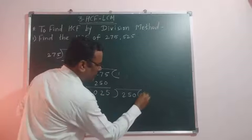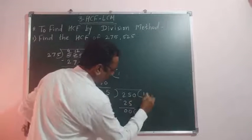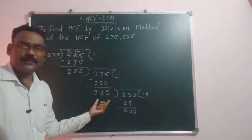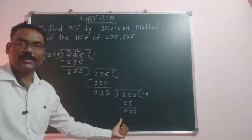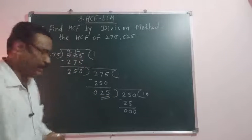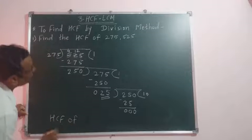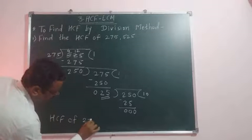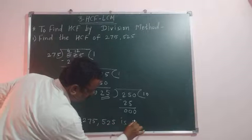250 by 25. So 25 ones are 25. That means we can divide here 250 completely by 25. We get the remainder 0. Therefore, 25 is the HCF. So we can write here, therefore, HCF of 275 and 525 is 25.